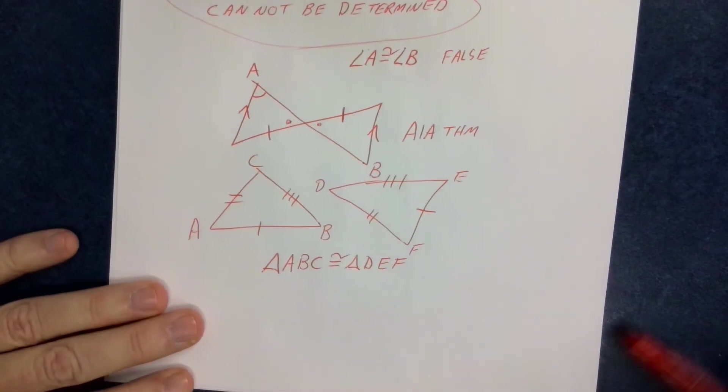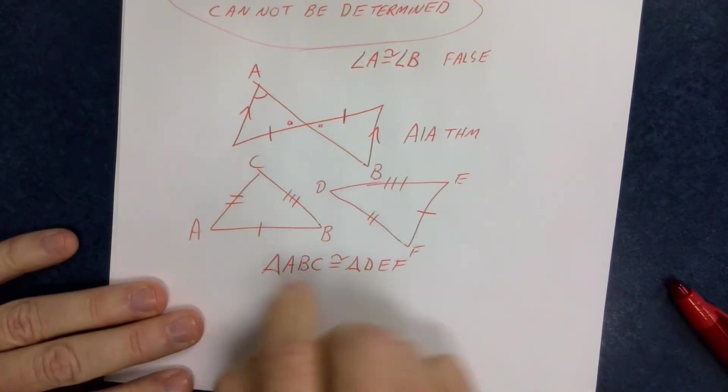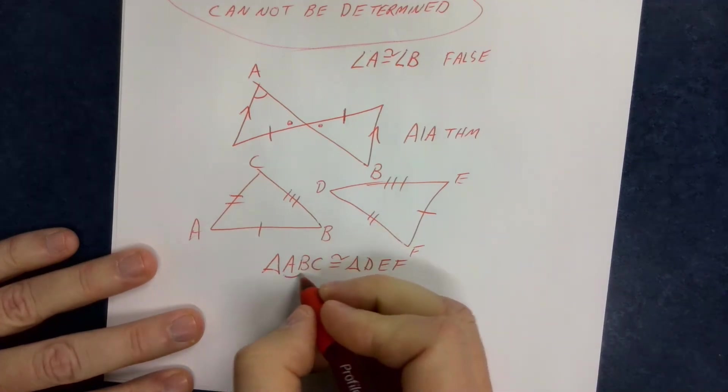And you're like, I know this triangle right here is congruent to this triangle right here because of SSS. But when I write it like this, is that true? Well, this is how I can check to see if it's true. Let's take a look at segment AB. Segment AB is a single mark.